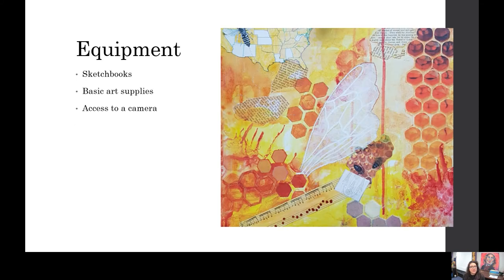For basic equipment, everybody will work in a sketchbook — we sell sketchbooks or you're welcome to get your own. You need a basic set of art supplies: 2B pencils, putty rubbers, coloured pencils, and a little set of watercolours. If you've got oil pastels, gouache, or acrylics, that's great, but you can also use all of those materials within the classroom. If you've got access to a camera that's good too, as we often take photos — whether working on portraits or natural forms — as a good way to start your drawing.